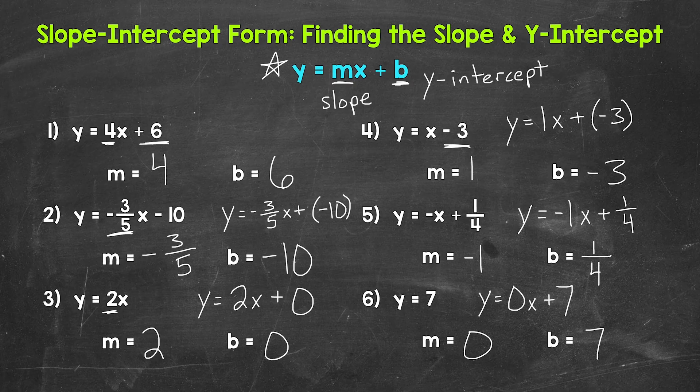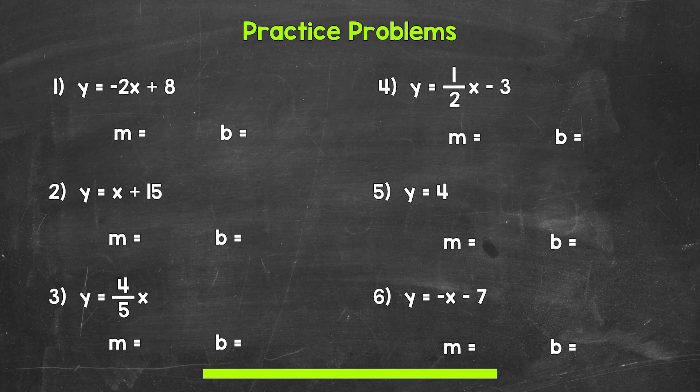Now that we've gone through some example problems together, it's time for you to try some practice problems on your own. Have paper and a pencil ready. Here are your practice problems — identify the slope and y-intercept from each equation. Write m equals whatever the slope is and b equals whatever the y-intercept is. I'll give you three minutes and then we will go over the answers. Feel free to pause the video if you need more time, or jump ahead to the answers whenever you are ready.